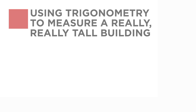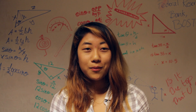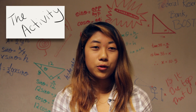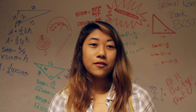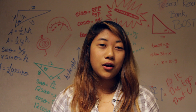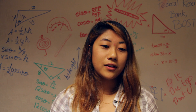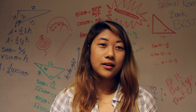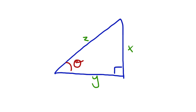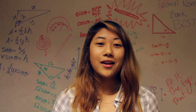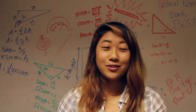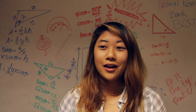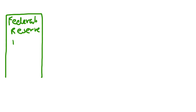As part of our trig unit for math class, we were learning how to find the measurement of the length of the side of a right angle triangle when given an angle and the length of another side. With that skill, we were able to find the height of a really tall building — specifically, the Federal Reserve Bank in Boston.